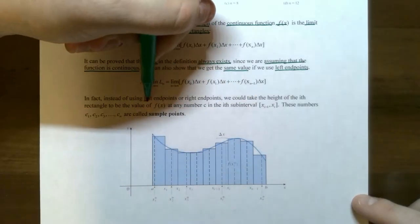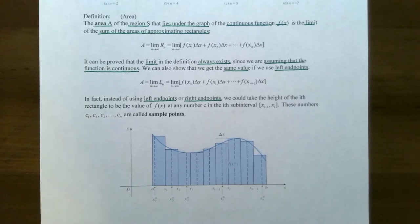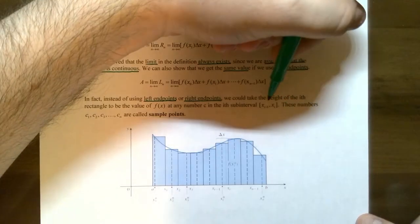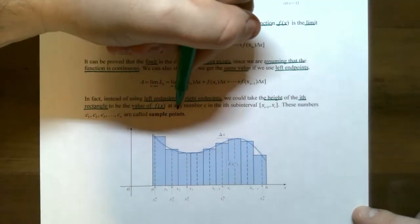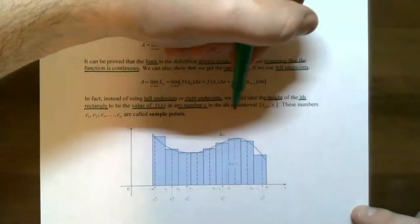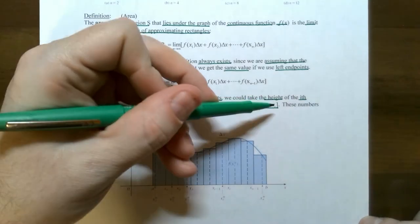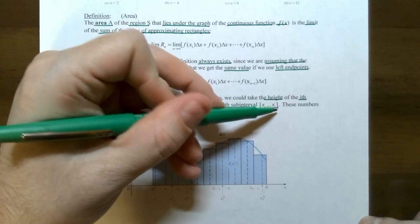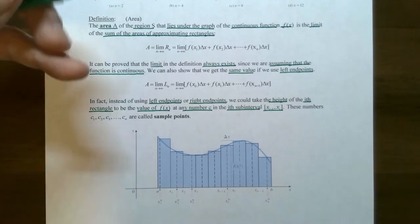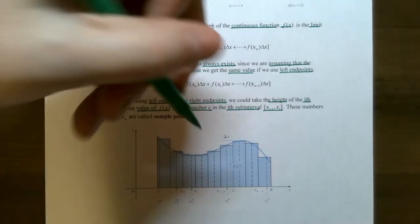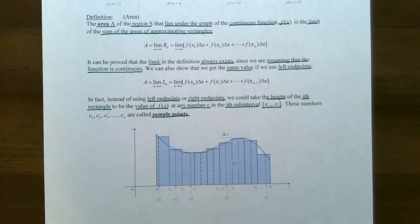Instead of using left endpoints or right endpoints, it turns out that you can use any point — any x value in any subinterval to find out the height. The height of the ith rectangle is the value of f of x at any number x equals c in the ith subinterval. So that's saying if you take any x value between x sub i minus 1 through x sub i, including either endpoint, you can find the area under the curve. These numbers c in each of these intervals are called sample points: C sub 1, C sub 2, all the way to C sub n.